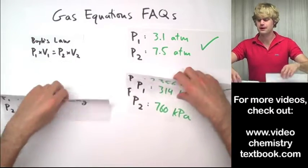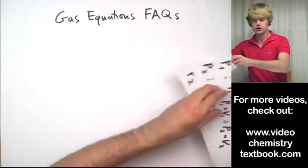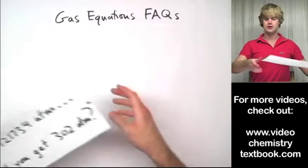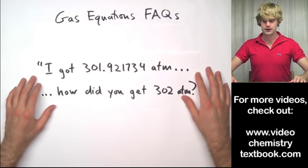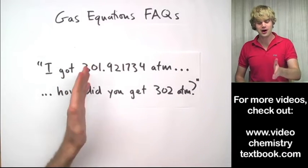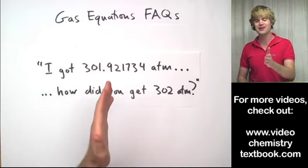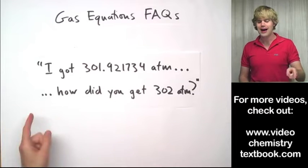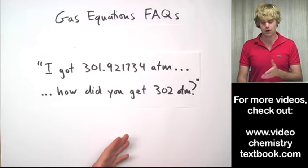Now one last question that I get a lot is something like this where somebody will look at my answer that I get in one of the videos and they'll say, I got 301.921734 atm. How did you get 302 atm?